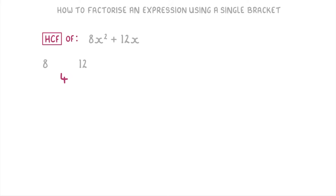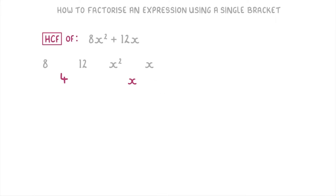Next, we need to look at the letters and see if there are any common factors in those. This question only has x's in it. The first term has x squared, which means x times x, and the second term just has a single x. This means the biggest number of x's they both have in common is just a single x, so the highest common factor for the letters is just x. So both terms have a factor of 4 in common and a factor of x in common, meaning the overall common factor is 4x.